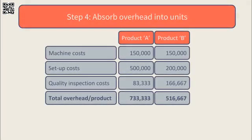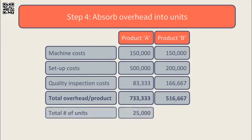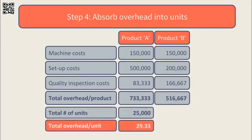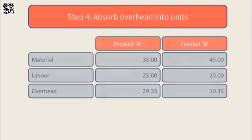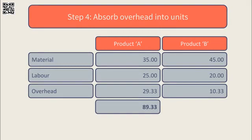Having calculated the total overhead attributable to Product A and B, we can now generate the overhead per unit. With 25,000 units of Product A produced, the overhead per unit is $29.33 ($733,333 ÷ 25,000). With 50,000 units of Product B produced, the overhead per unit is $10.33 ($516,667 ÷ 50,000). Adding these overhead costs to the direct material and labour costs gives a total cost per unit of $89.33 for Product A and $75.33 for Product B.